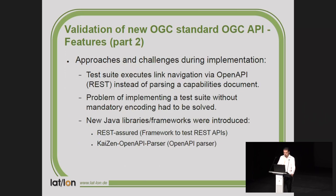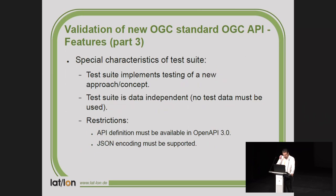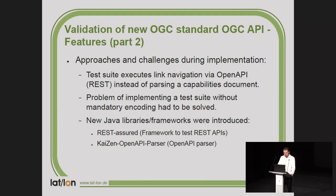There were a couple of new challenges during implementation. In the past we had a capabilities document to parse, but now there's an OpenAPI document — a JSON document — so the parsing was different. Also, there's no mandatory encoding, which is a real hard issue for a test suite because we don't know what to expect as a return value. We defined a restriction that JSON encoding must be supported; otherwise the test suite will not work. We also introduced new Java libraries and frameworks to make the implementation easier.